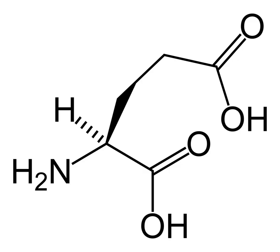Research shows that glutamate receptors are present in CNS glial cells as well as neurons. These glutamate receptors are suggested to play a role in modulating gene expression in glial cells, both during the proliferation and differentiation of glial precursor cells in brain development and in mature glial cells.